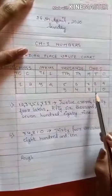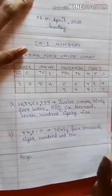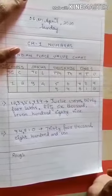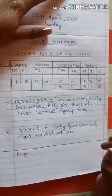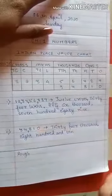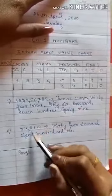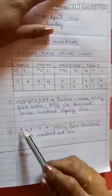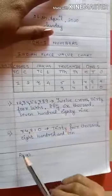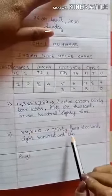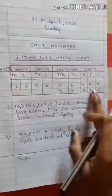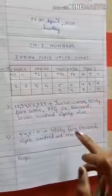Now coming to the second example: 3 4 8 1 0. Again, what is the very first step? Children, always remember — the very first step is giving commas. After the first period — which is ones, tens, hundreds — we put a comma. This is in the thousands period, so the number name is thirty-four thousand eight hundred and ten. I hope this is clear to you students. Please write it in the same way, use pencil for making the chart, and write these examples as well.